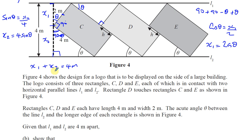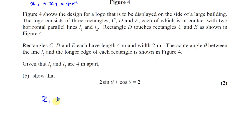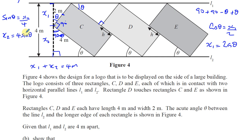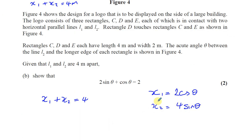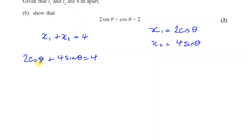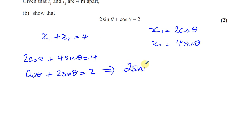Since x1 plus x2 equals 4, we get 2 cosine theta plus 4 sine theta equals 4. Everything is divisible by 2, so dividing through gives cosine theta plus 2 sine theta equals 2. That completes part B. Part C is next.